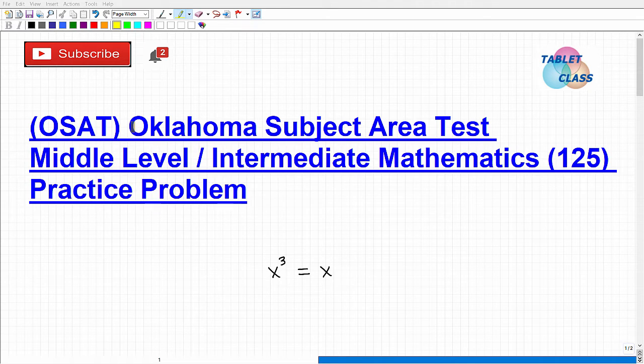Okay, let's talk about the Oklahoma Subject Area Test, and specifically we're going to be talking about the OSAT Middle Level Intermediate Mathematics, and here is the test code 125. What we're going to be doing in this video is taking a look at a math practice problem that you should be able to handle pretty nicely if you're fully prepared for this exam. But before we get into that, let me go ahead and introduce myself.